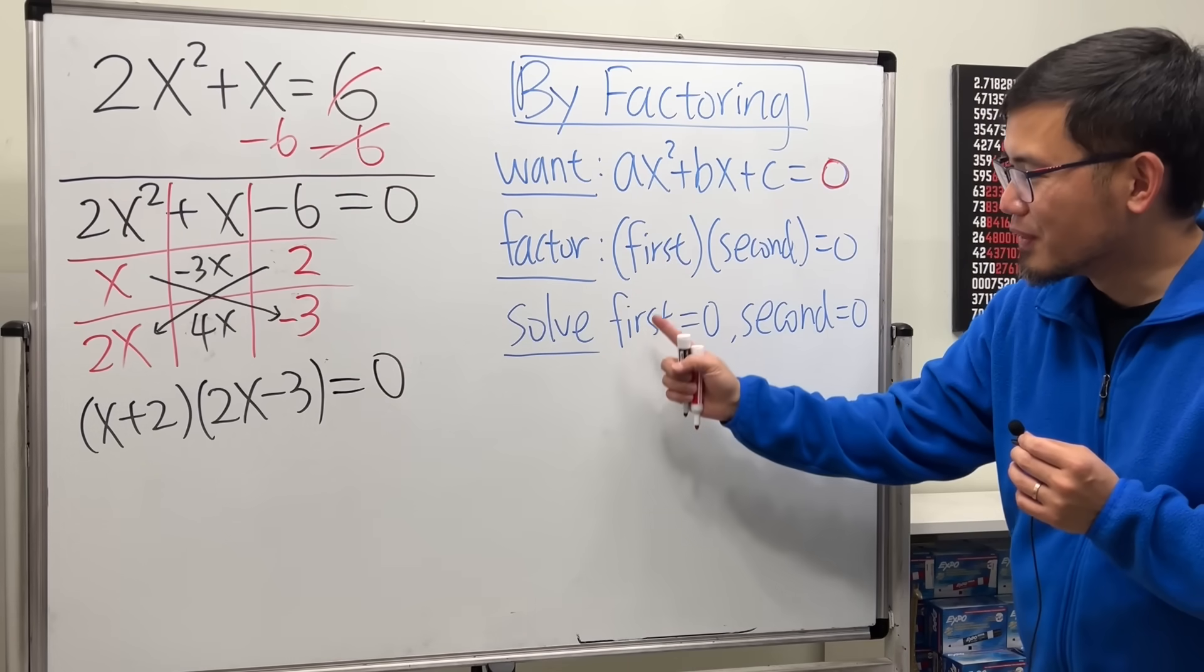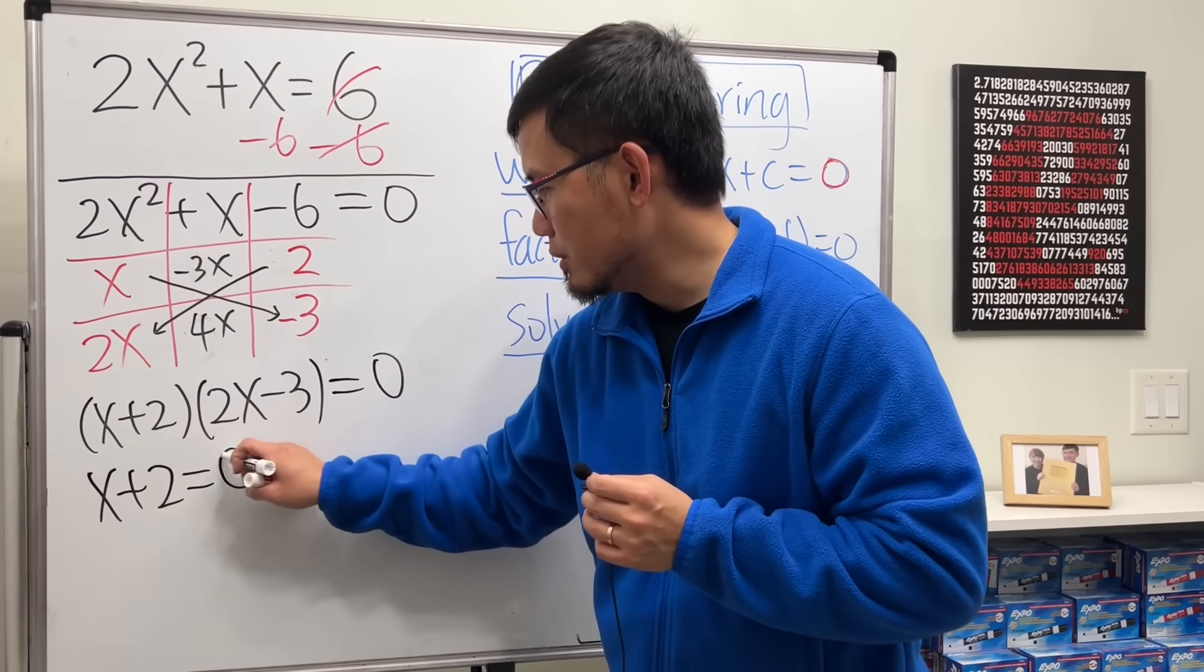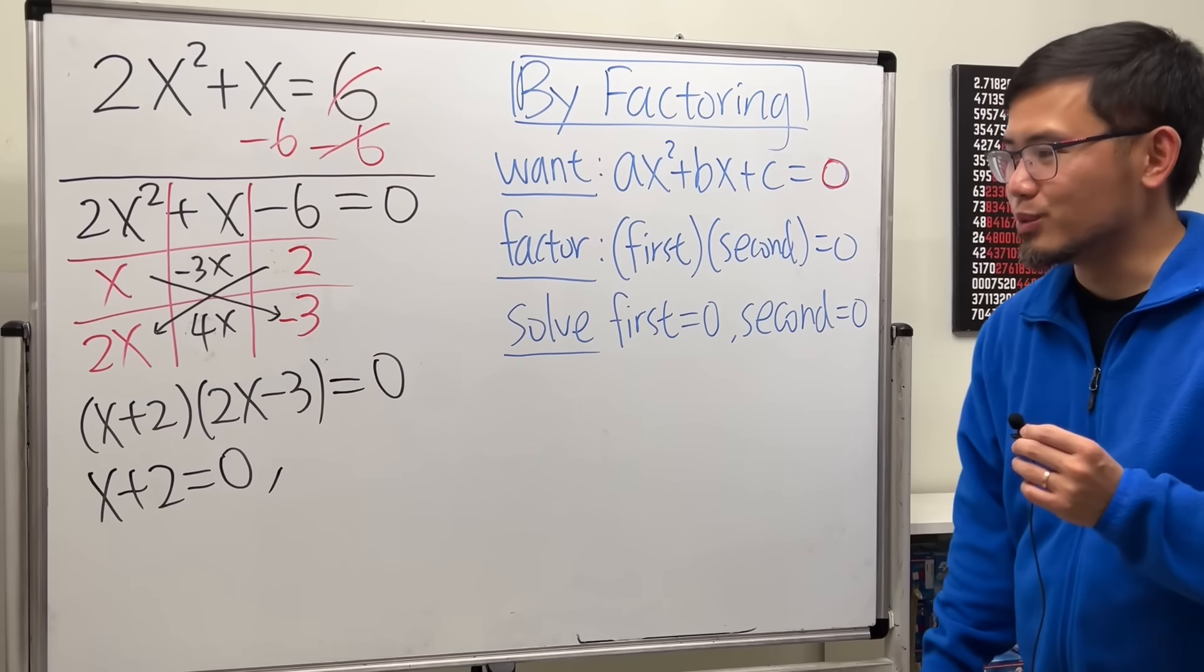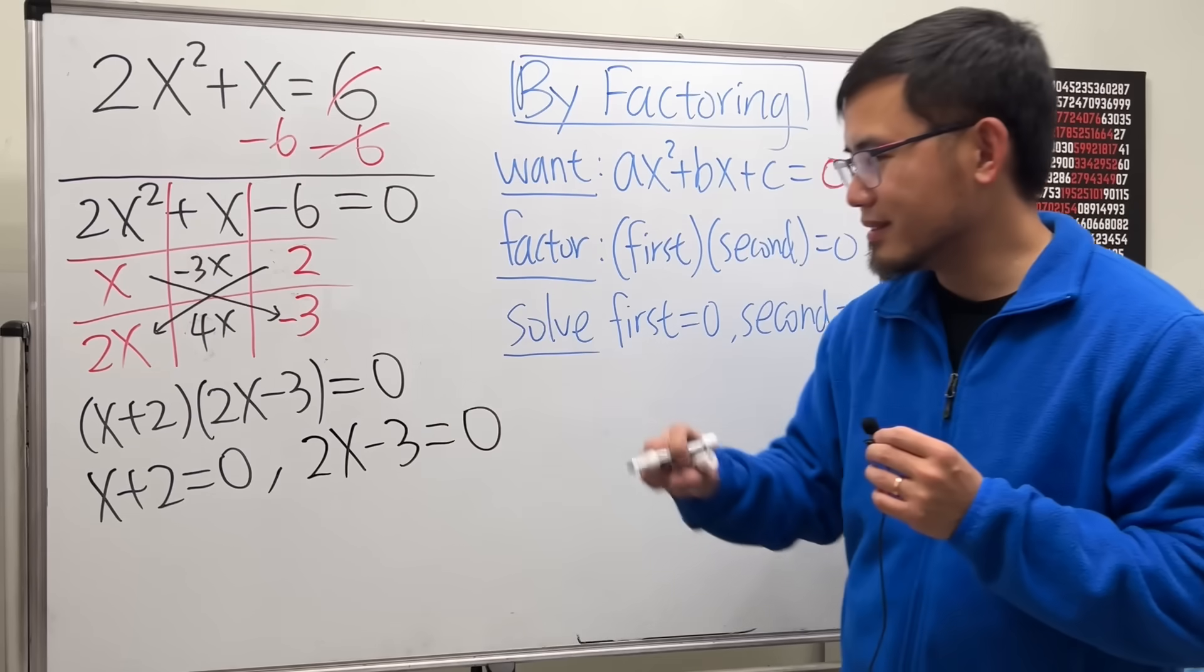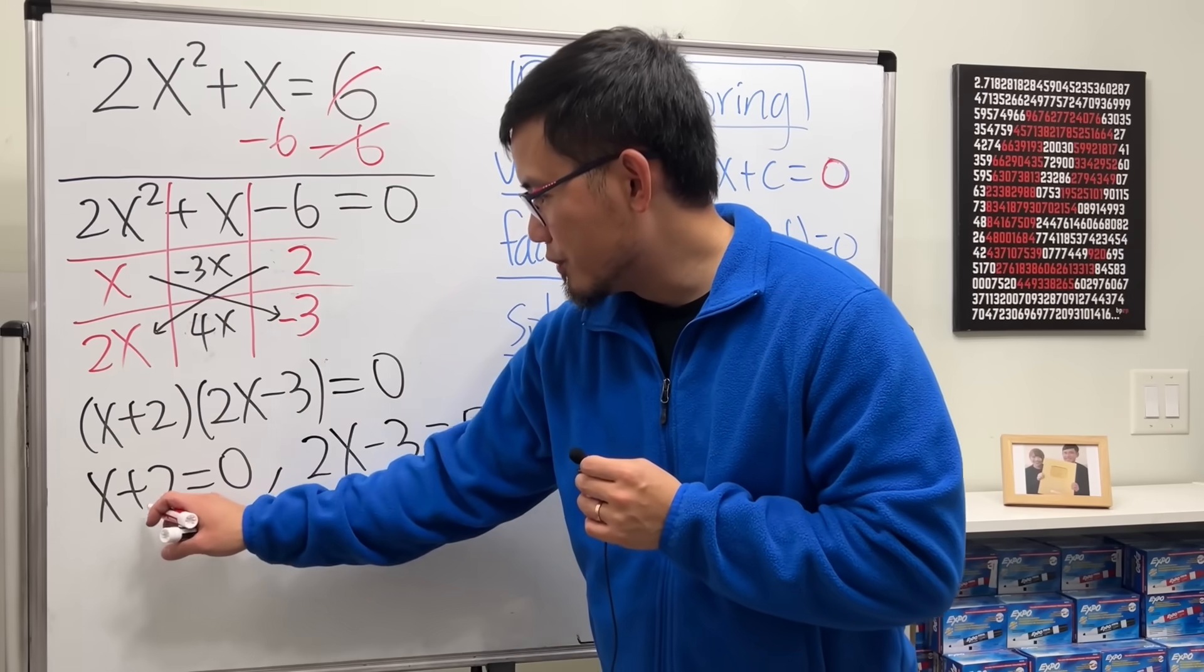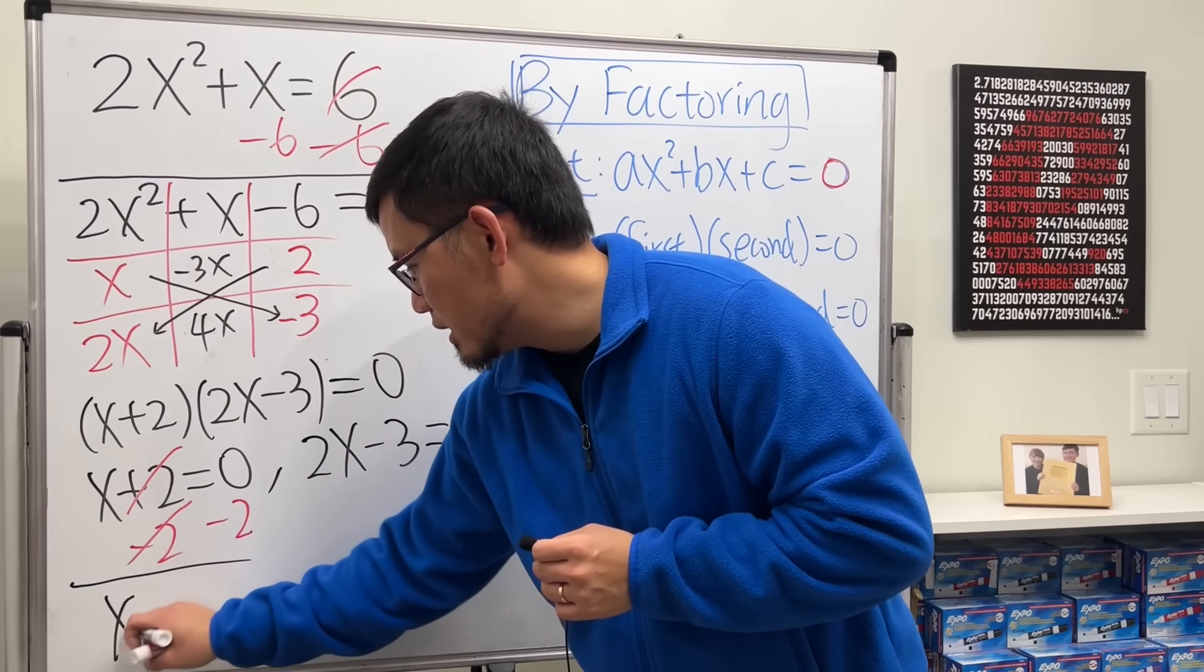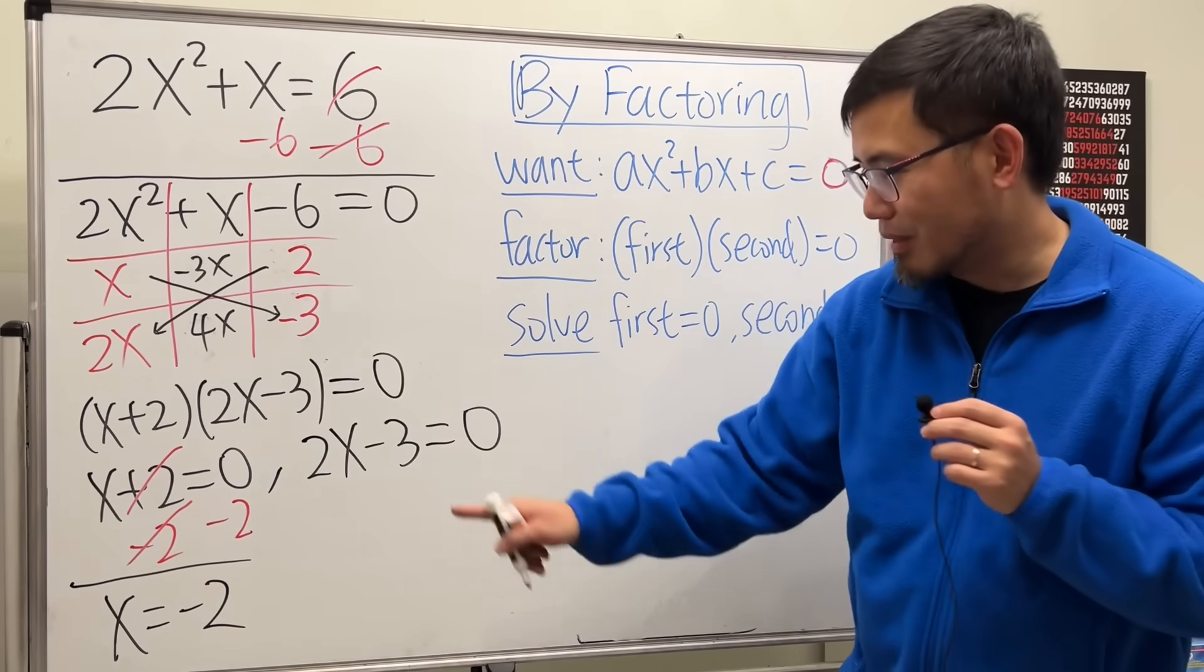We will make the first factor equal to 0. So x plus 2 equals 0. And then we also make the second factor equal to 0. So here we have 2x minus 3 equals 0. Solve this. Solve that. For the first one, just move the 2 to the other side by subtracting 2 on both sides, and we get x equals negative 2.